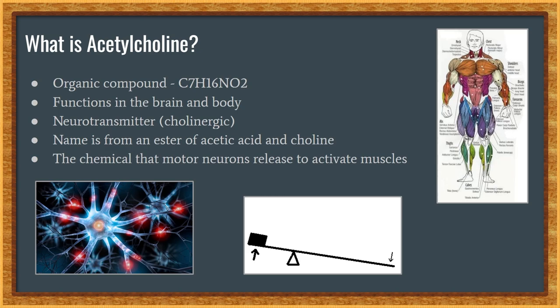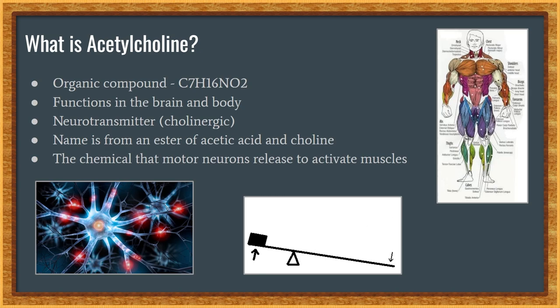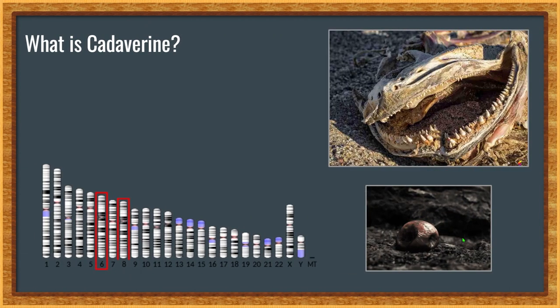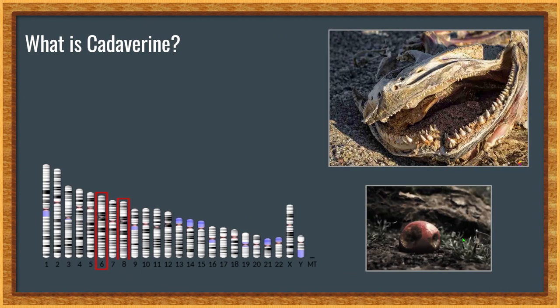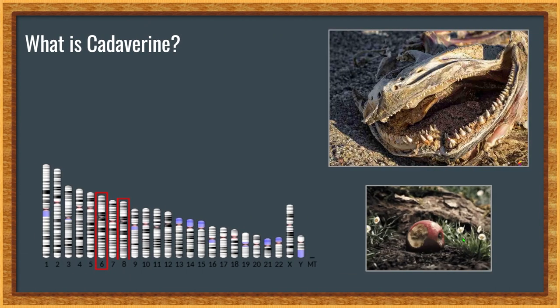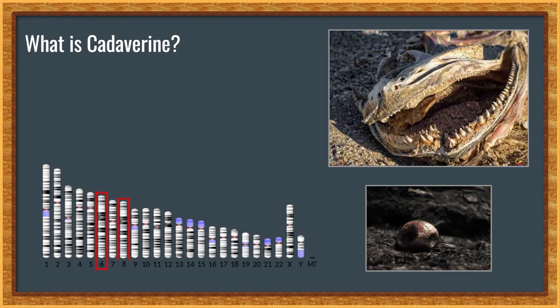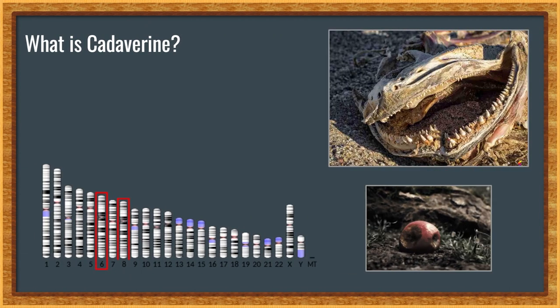Acetylcholine is the neurotransmitter used at the neuromuscular junction. In other words, it is the chemical that motor neurons of the nervous system release in order to activate muscles.